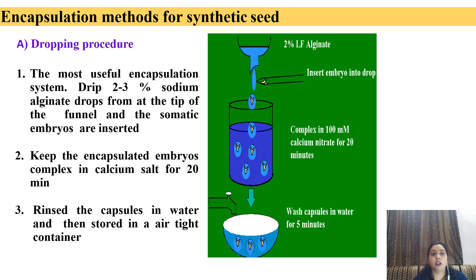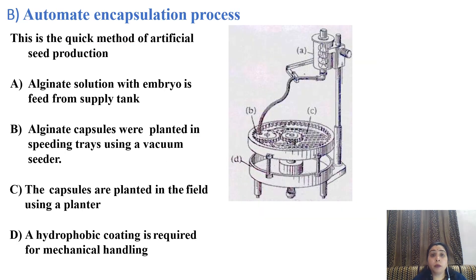Encapsulation methods for synthetic seeds — dropping procedure: The most useful encapsulation system in which we drip sodium alginate drops containing somatic embryos into calcium solution. The encapsulated embryos are stored in an airtight container. Automated encapsulation process: the alginate solution with embryos is fed from a supply tank, forming alginate capsules in trays. The capsules may receive a hydrophobic coating.